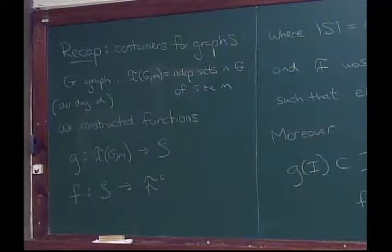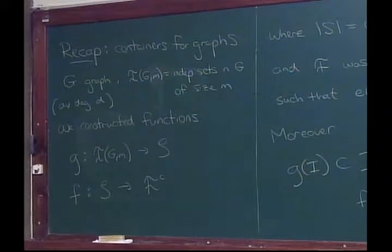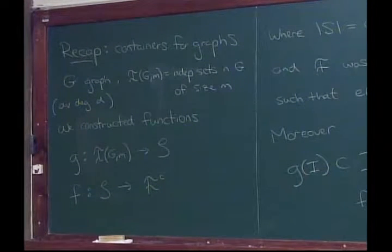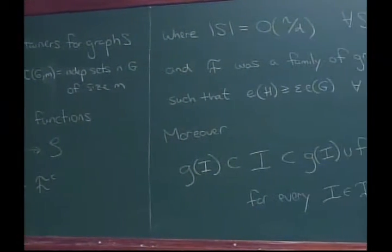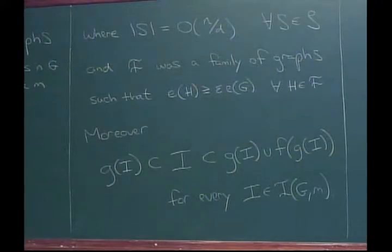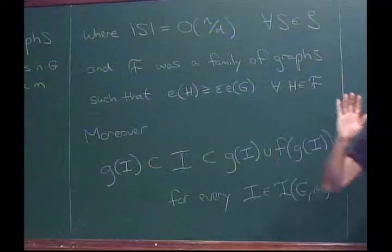We have a graph and we look at the collection of independent sets of the graph — let's say the ones of size M — and let's say it has average degree D. What we did was we constructed two functions which are a little weird. Let me draw a picture of them. So this is our graph, and this is our independent set.